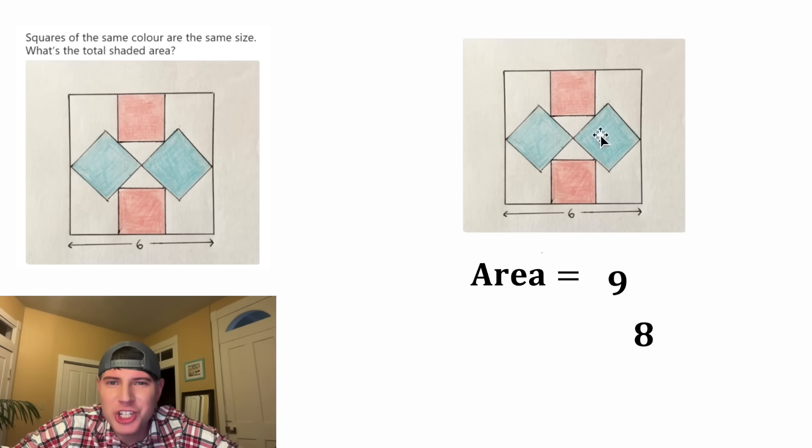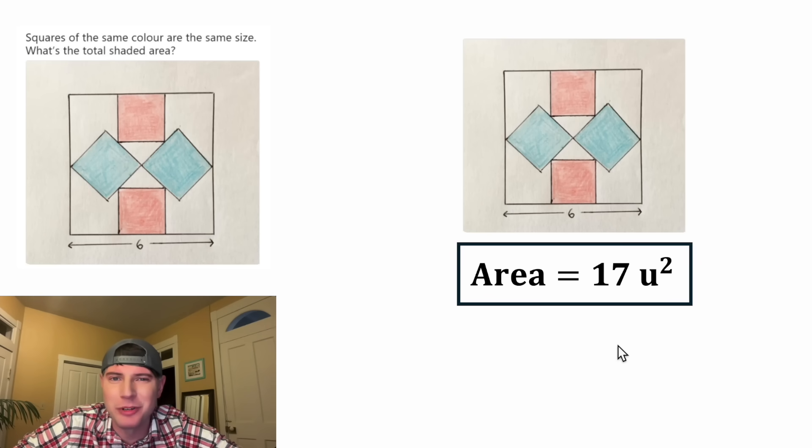And now for the total shaded area, we can add nine plus eight to give us 17. And that is the answer to the question. Let's give it a label of square units and put a box around it. In this given diagram, assuming everything is symmetric, the total shaded area will equal 17 square units.